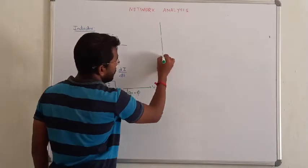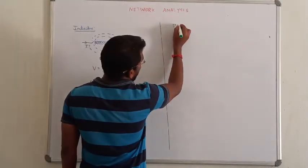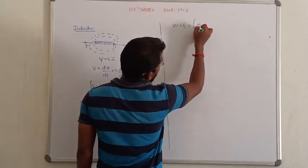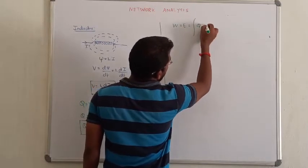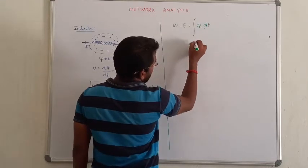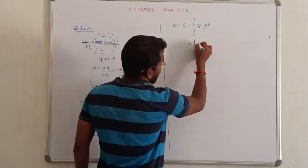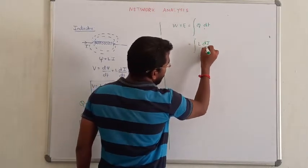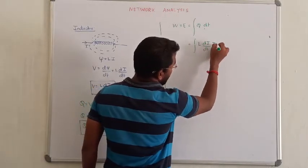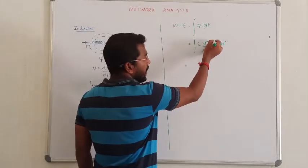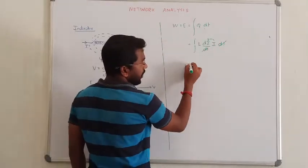Next, to calculate energy, energy is equal to integral of power into dt. So integrate the power: L into di by dt into i into dt. dt cancels, so we integrate i di, which gives i squared by 2.